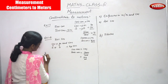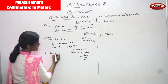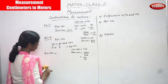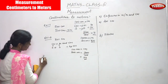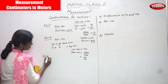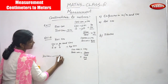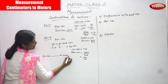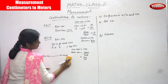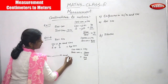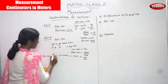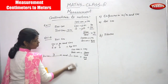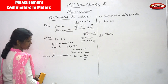The question is: 301 centimeters — convert into dash meters and dash centimeters. This is the question. So what are you going to do? 3 meters and 1 centimeter. This is the right answer.